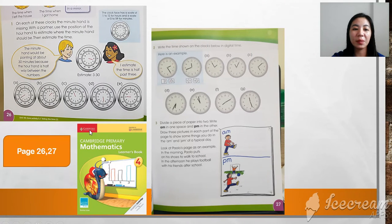Here you have some activities to do on your Cambridge mathematics learner's book, on page 26 and 27. You're going to answer this one. Number one: On each of these clocks, the minute hand is missing. With a partner, use the position of the hour hand to estimate where the minute hand should be, then estimate the time. So you're going to answer this one.